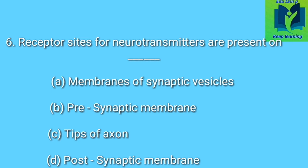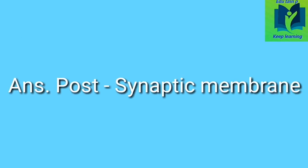Receptor sites for neurotransmitters are present on dash. Option A: membranes of synaptic vesicles. Option B: presynaptic membrane. Option C: tips of axons. Option D: post-synaptic membrane. Answer: post-synaptic membrane.